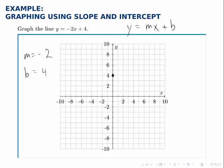Now we need a second point to graph the line, because we need two points to determine the line, and the slope gives us our second point. The slope tells us that for every unit we go to the right, we go down by 2 in this case, because the slope is negative 2.